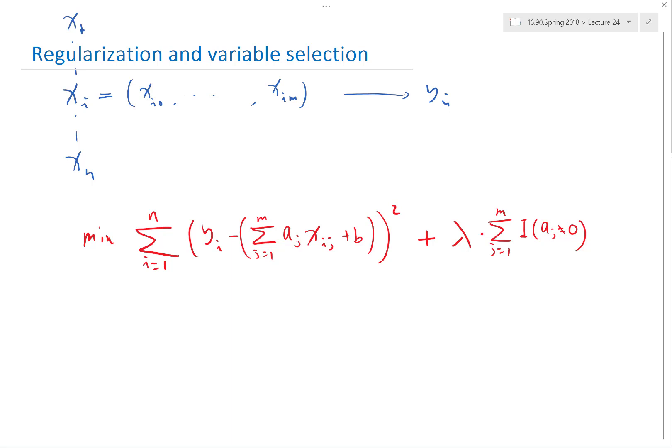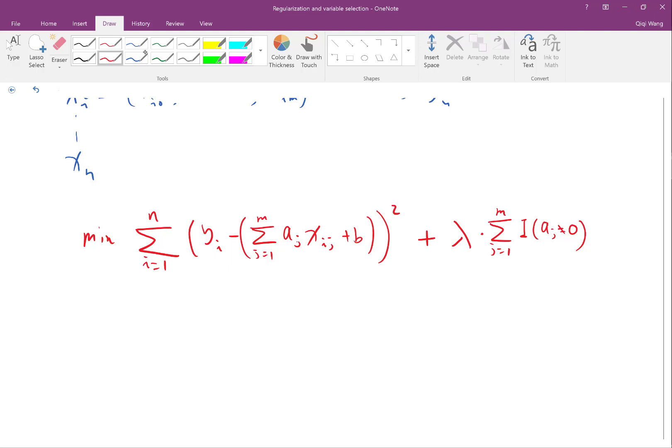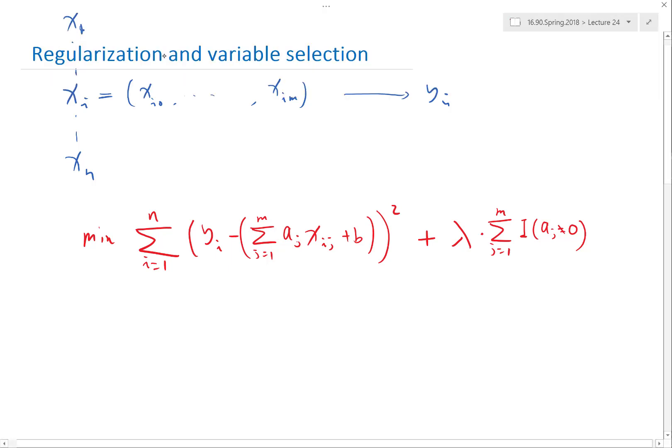So in practice, what we have been doing in regularization is trying to construct things that have the spirit of variable selection but not exactly this problem. This, for example, is called L0 norm by people, but it's actually not really a norm, though it's still called L0 norm.